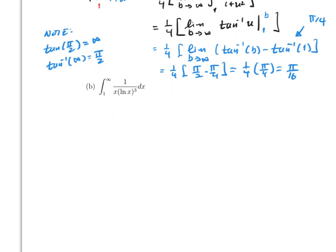Now part b — very similar. The substitution is u equals ln(x), so du equals dx/x. When x goes from 1 to infinity, u goes from ln(1) to ln(∞), which is 0 to infinity. The integral becomes equivalent to integrating from 0 to infinity of du over u³.